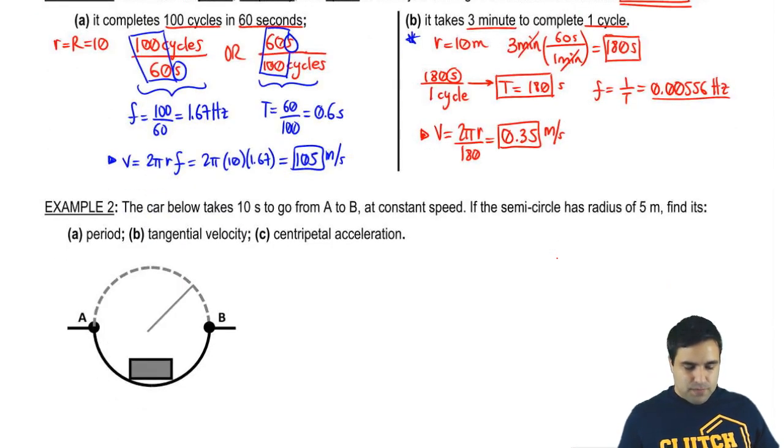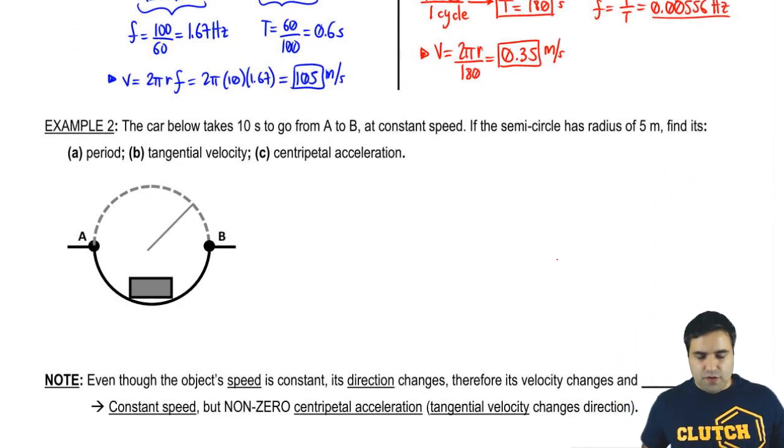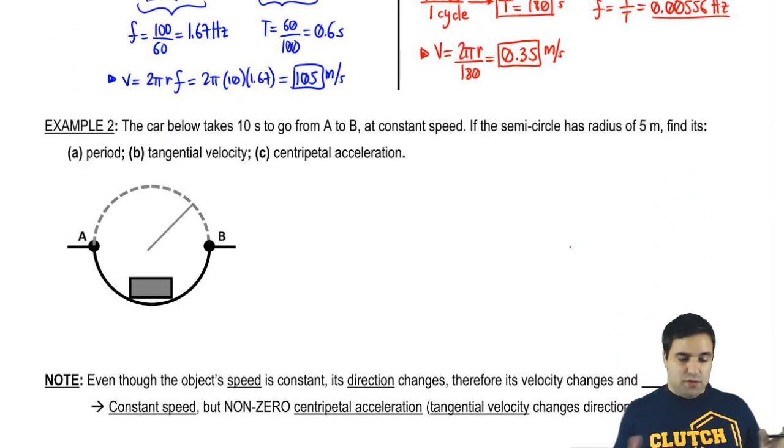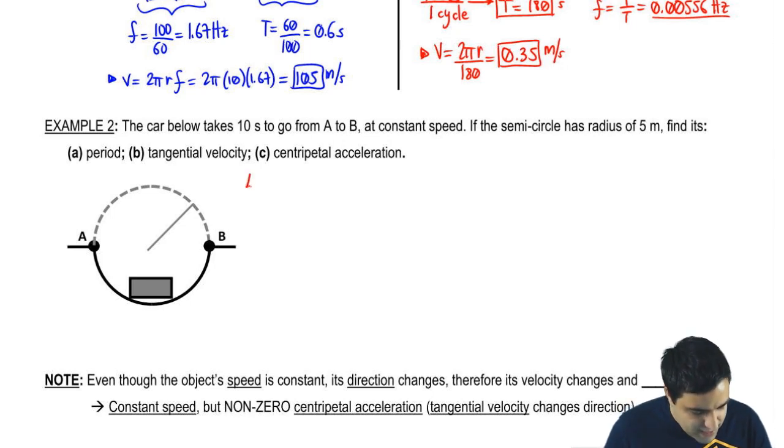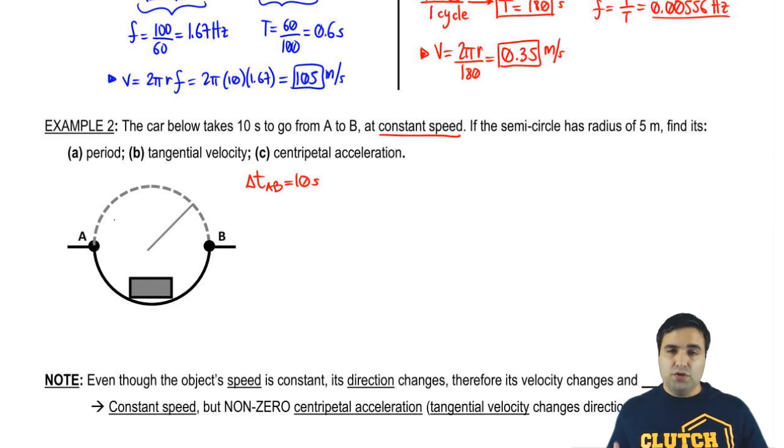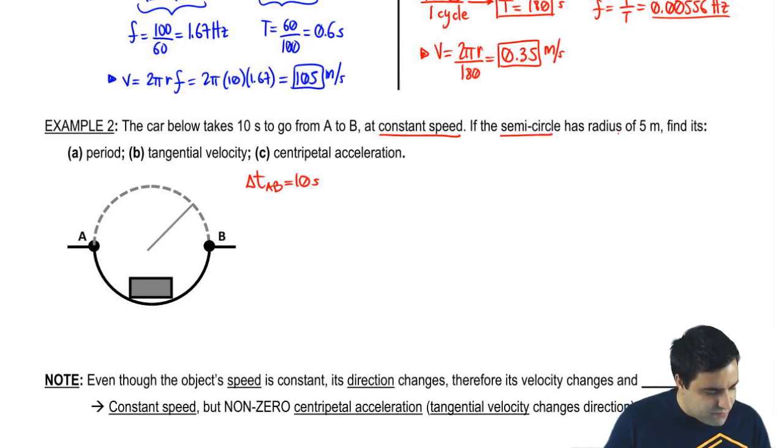That's it for this one. Hopefully you agree. Pretty straightforward. That's just showing how to use information, how to figure out if information is period or frequency. Let's do this example real quick. The car below takes 10 seconds to go from A to B. So I can write that the time delta T from A to B is 10 seconds at a constant speed. If it's not immediately obvious, just to confirm, this is circular motion. Circular motion doesn't mean you necessarily have to go around an entire circle. As long as a tiny little piece of your circle, of your motion is circular, this is circular motion.